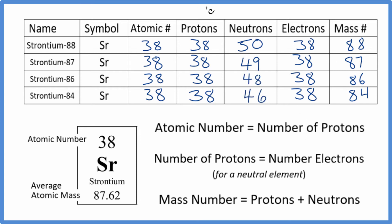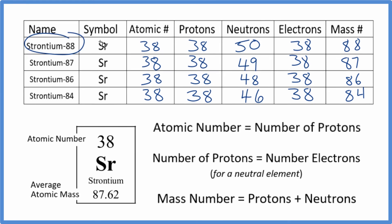So most of the time when you do these charts, they'll give you either the mass number or the neutrons. You won't have to really worry about isotopes. If they don't give you the mass number or neutrons, the way you can figure the mass number out is, when we look at isotopes, the most common one here is strontium-88.